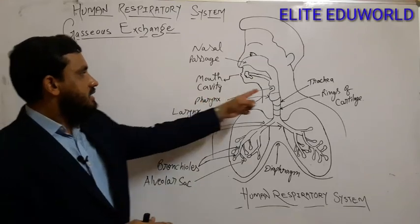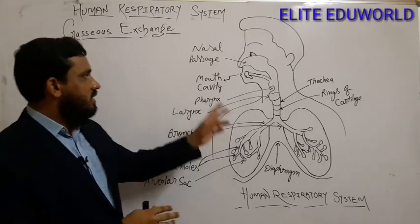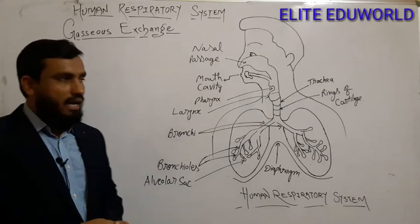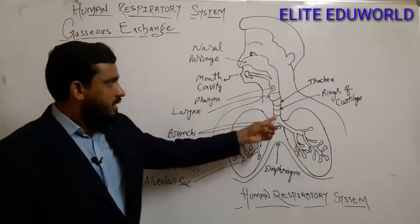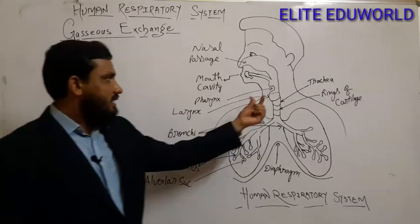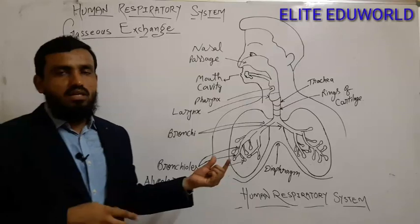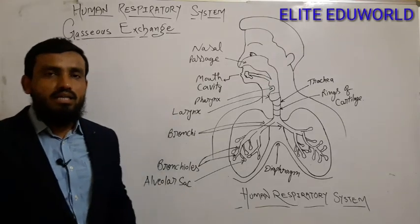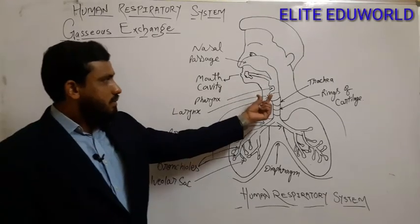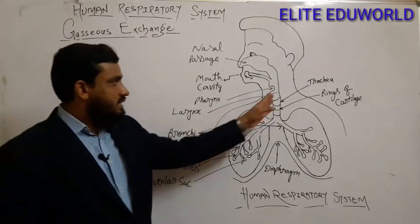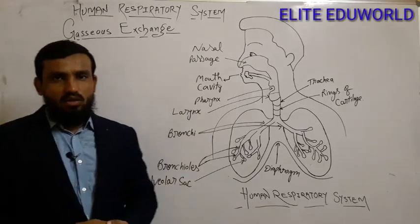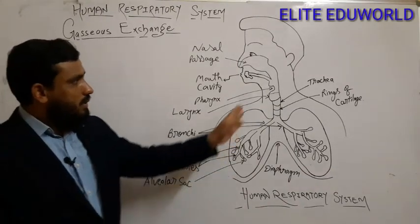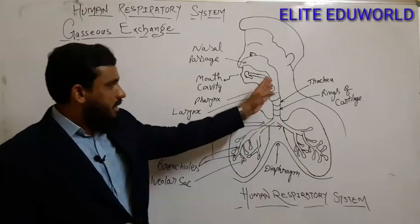Then the air passes through the pharynx, which is the common opening for both the digestive system and the respiratory system. From the pharynx it enters the larynx. The larynx is also called the sound box, which helps produce sound, and it is present in the neck region in front of the trachea.